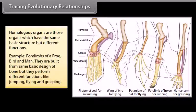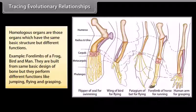Homologous organs are those organs which have the same basic structure but different functions. Example: four limbs of a frog, bird, and man. They are built from the same basic design of bone but they perform different functions like jumping, flying, and grasping.